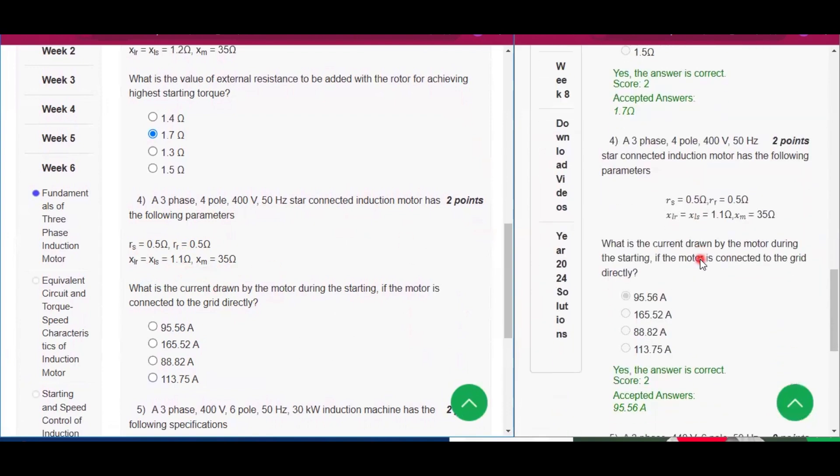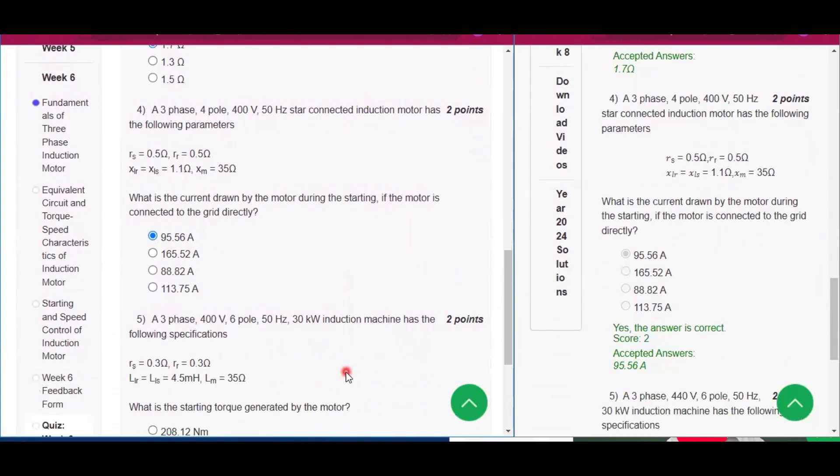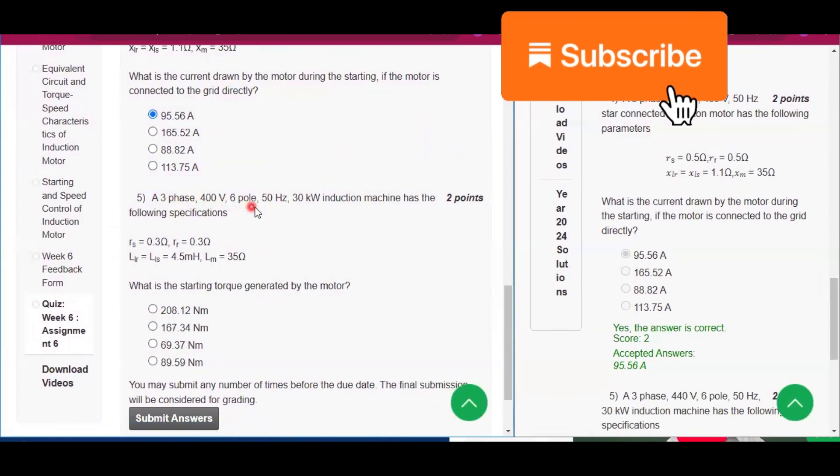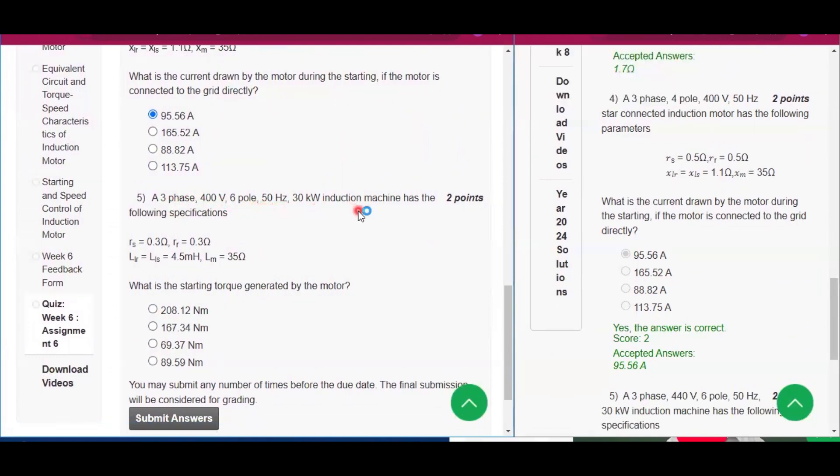Xm equals 35 ohm. What will be the answer? 96.56 ampere.